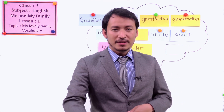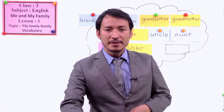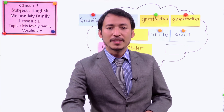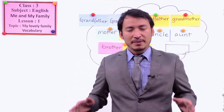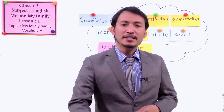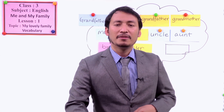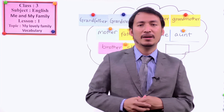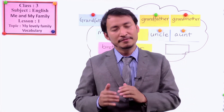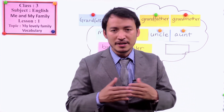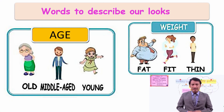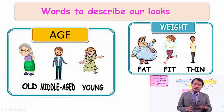So we are talking about these describing words. We can describe people according to different ways, different themes or different words. For example, if someone is different in age, we have a different word for that. If someone has many years — for example, you can see here — old lady, middle-aged, young lady.